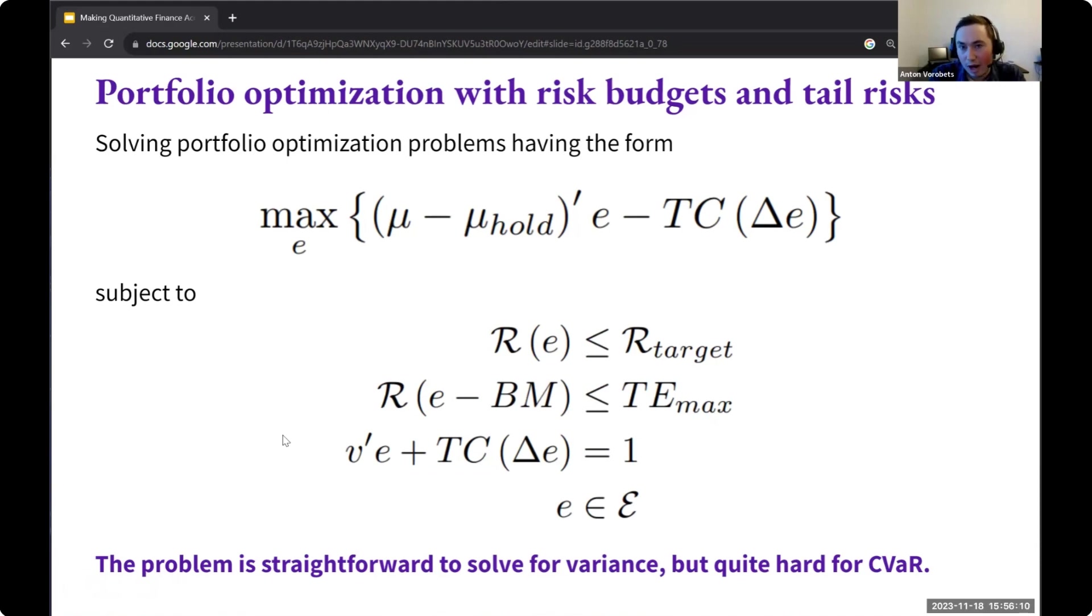But it is quite challenging to solve for CVaR optimization in a fast and stable way. And then usually in practice, when you do portfolio optimization, you would also want to introduce some uncertainty into the means estimate that you have. So you would solve this problem many times. And this is where you really need the speed and stability. And I think that this is one of the reasons that people do not use CVaR so much right now because it's really hard to solve compared to variance.